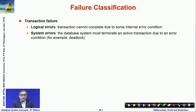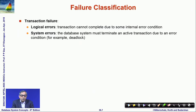Let us look at the generic types of failures that can happen. One is that a transaction can fail due to a logical error, an internal error, or a system error where the system must terminate the transaction. We have talked about situations where deadlock might happen and a transaction needs to be rolled back — that is a kind of transaction failure.